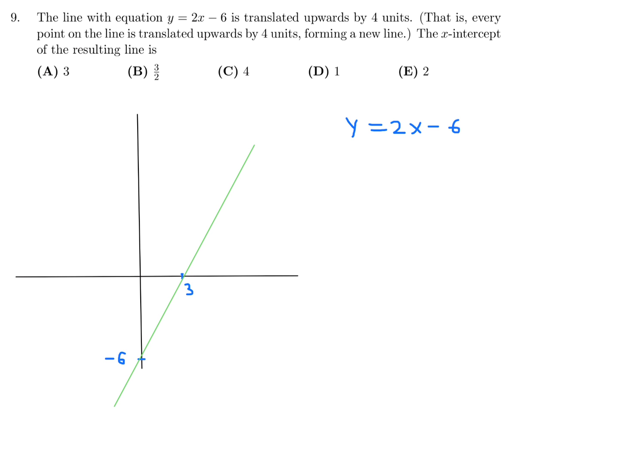We're translating it up four units, so from minus 6 it would go up to minus 2. The line would be parallel but shifted up. This is now minus 2 because it had to go up four units. This line is y equals 2 because the slope is the same, since it's parallel, 2x plus some b. I know a point on the line: when x is 0, y is minus 2. I can substitute that in and get my value for b, then I can figure out my x-intercept.